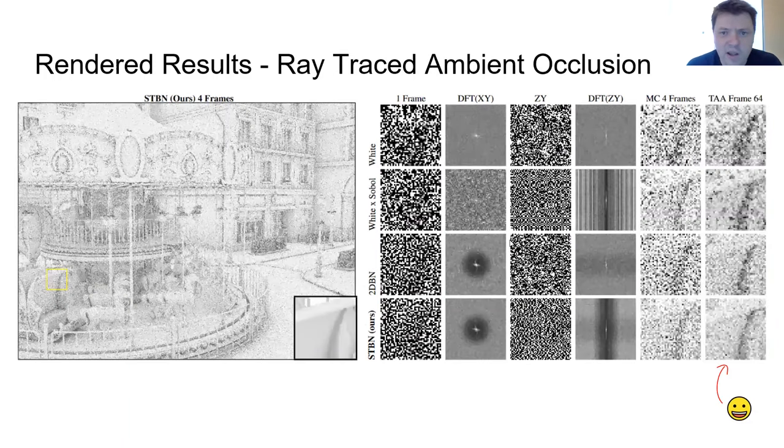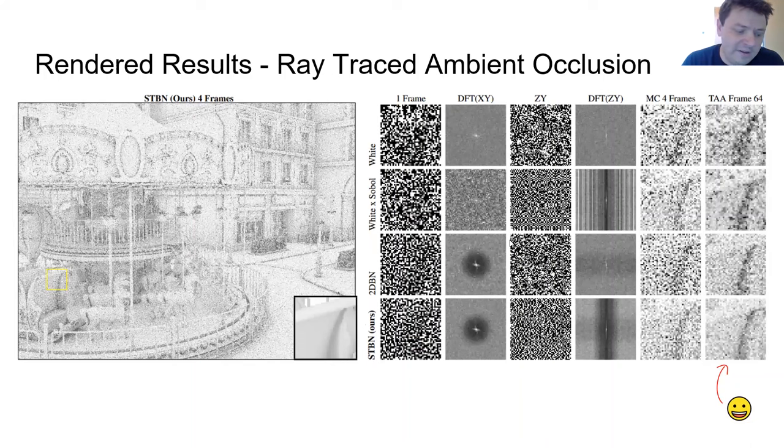And then lastly here we have ray traced ambient occlusion. And this one is actually under TAA where the others were under exponential moving average which is TAA without temporal reprojection or color history clamping. And so once again you can see that our noise is the best. We have the clearest image, lowest error magnitude, and the error we do have is blue noise distributed.